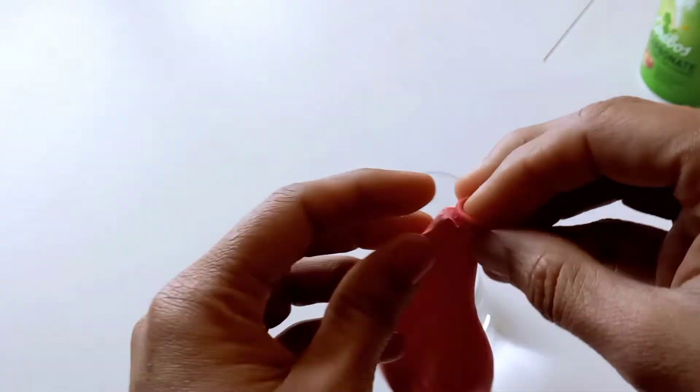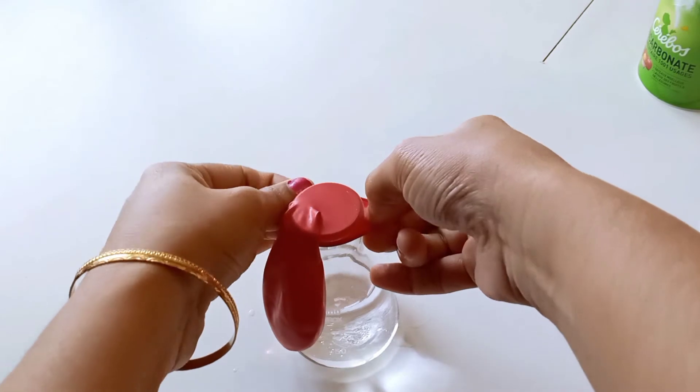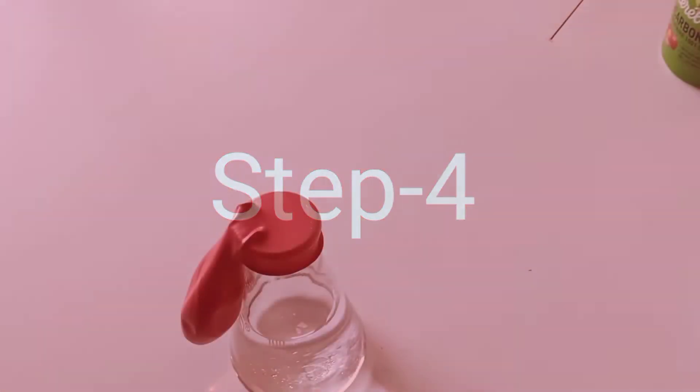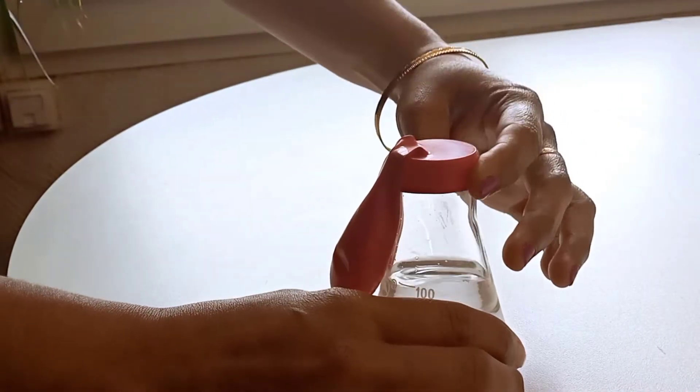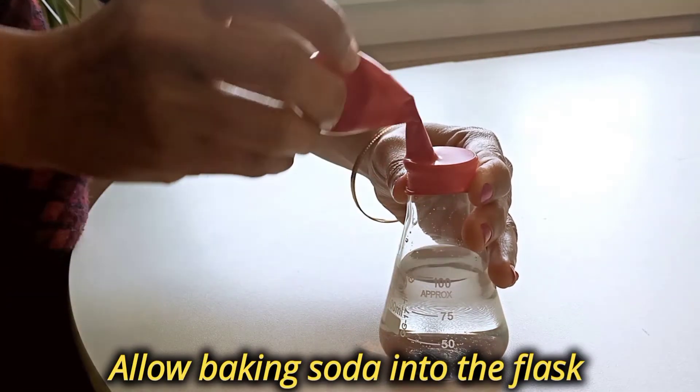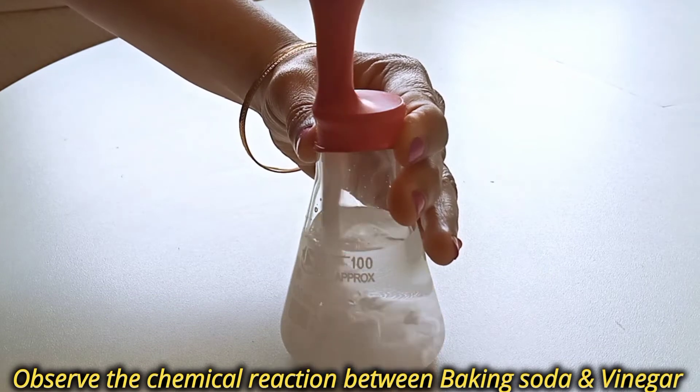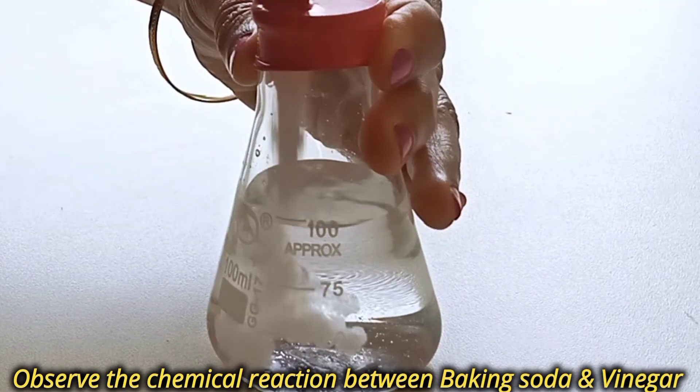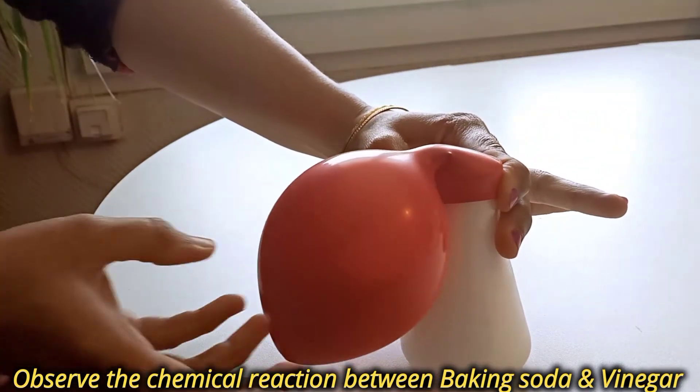Step four: Once the balloon is fitted on the top of the flask, hold the balloon up and allow the baking soda to fall into the vinegar flask. Now observe the chemical reaction inside the flask and its effect on the balloon.